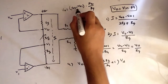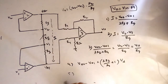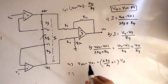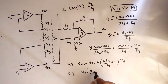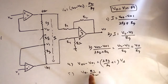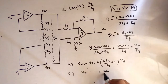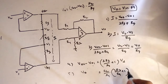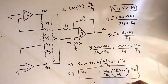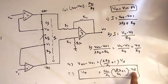If we re-substitute, VO2 minus VO1 can be written as VO into R1 by R2. So VO into R1 by R2 equals (2R3 plus RG) divided by RG into VD. Rearranging, VO equals R2 by R1 into (2R3 by RG plus 1) into VD. This confirms that output voltage equals some gain into the input voltage.